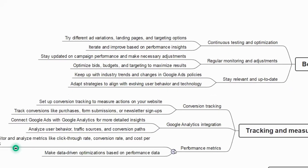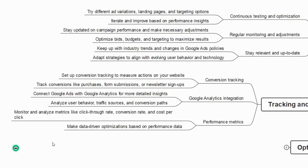The next area is performance metrics — monitor and analyze metrics like click-through rate, conversion rate, and cost per click. For example, if you have a budget of 1000 rupees and Google charges 0.68 rupees per click, then your cost per click is 0.68. Make data-driven optimizations based on this performance data by adjusting keywords or targeting strategies.